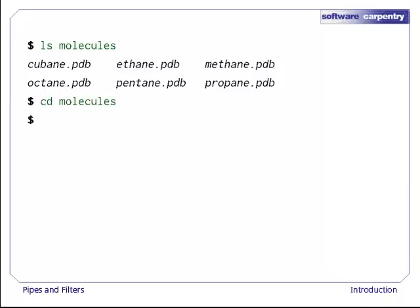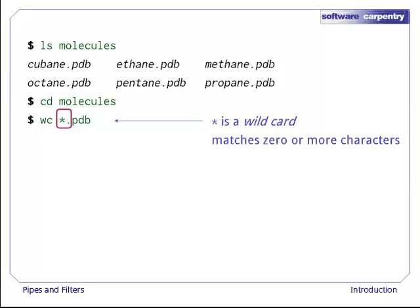Let's go into that directory with cd and run the command wc star.pdb. The star in star.pdb is a wildcard character. It matches zero or more characters, so the shell expands the expression star.pdb to be the complete list of .pdb files.